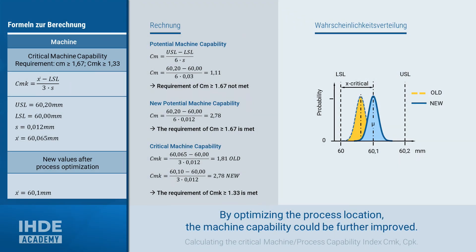If you wanted to improve the value of 1.81, you could adjust the process and shift the process location closer to the nominal size. If one managed to make these congruent in the best case, the process capability would be improved from 1.81 to 2.78.